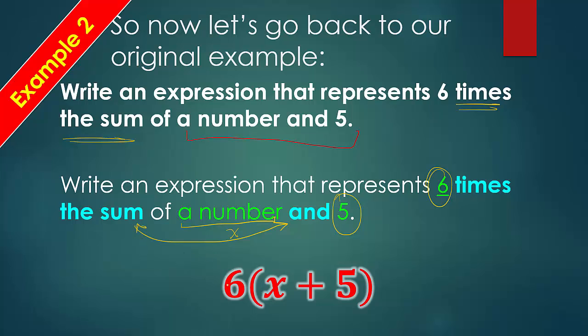So, what we do is we say six times, so this in parentheses, if there's nothing in between, that means we're multiplying six by everything in here. And then the sum of a number, x plus five.